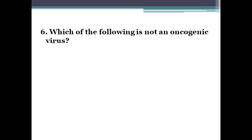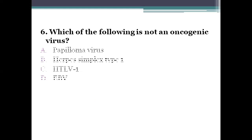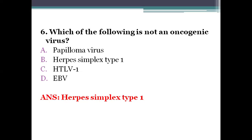Next question: which of the following is not an oncogenic virus? An oncogenic virus is a virus which causes cancer. Option A, papilloma virus. Option B, herpes simplex type 1. Option C, HTLV-1. Option D, EBV. The right answer is option B, herpes simplex type 1 — it is not an oncogenic virus and does not cause any cancer.